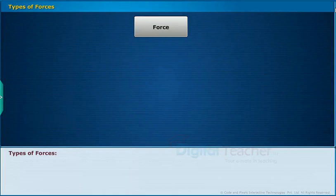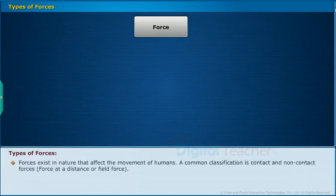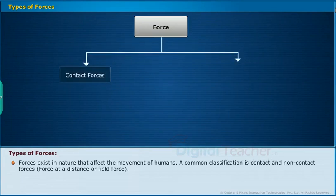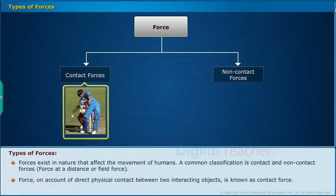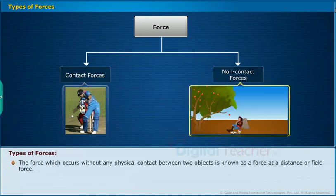Let us know about the types of forces. Forces exist in nature that affect the movement of humans. A common classification is contact forces and non-contact forces (force at a distance or field force). Force on account of direct physical contact between two interacting objects is known as contact force. The force which occurs without any physical contact between two objects is known as a force at a distance or field force.